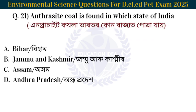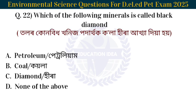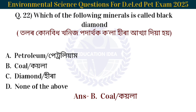Next question: Anthracite coal is found in which state of India? Which of the following minerals is called Black Diamond? Tolar kunbrit khanish produtola hil fira hikha dia. The answer is coal. Coal is called Black Diamond.